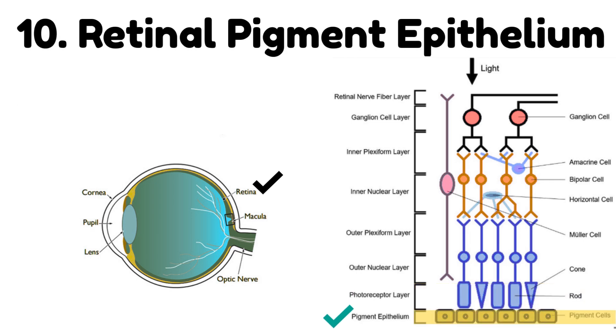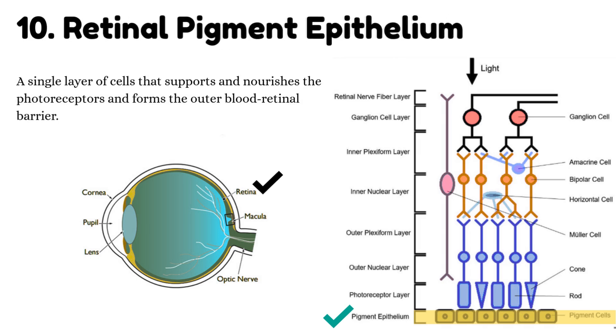Number 10: Retinal pigment epithelium. A single layer of cells that supports and nourishes the photoreceptors, and forms the outer blood-retinal barrier.